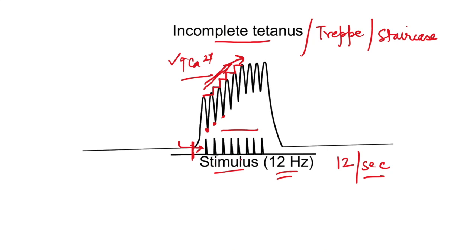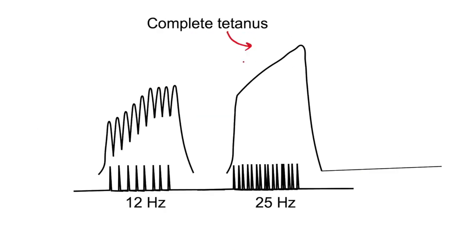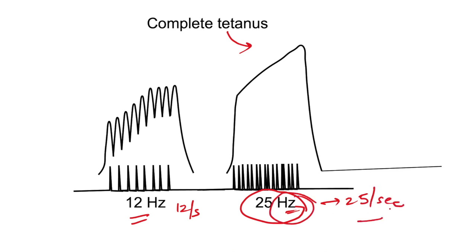Now, what if successive stimuli are given such that they fall in the contraction phase? We get something known as complete tetanus. In this case the frequency needed is much higher — here it is 25 stimuli per second. At this rate, stimuli are coming very early and falling in the contraction period, so the muscle is not relaxing at all. The second stimulus causes release of more calcium before relaxation can occur.